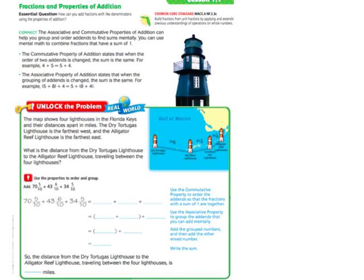The associative and commutative properties of addition can help you to group and order addends to find sums mentally. You can use mental math to combine fractions that have a sum of 1. Just as a recap, the commutative property of addition states that when the order of two addends is changed, the sum is still the same. For example, 4 plus 5 equals 5 plus 4. In other words, you can change these numbers into any order before you add — you can switch the order.